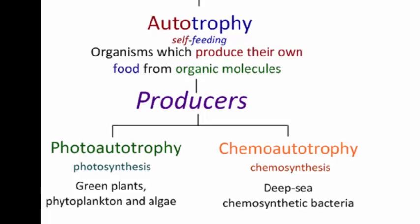We mainly study photo-autotrophs in biology because we're looking at photosynthesis. Examples would be any type of green plant, phytoplankton, and algae. We also have chemo-autotrophs — organisms that do chemosynthesis, making their food products out of chemicals. These would be deep-sea chemosynthetic bacteria, any type of bacteria living in hydrothermal vents or deep in the sea where they don't have access to sunlight. Those are your main two types of producers or autotrophs.